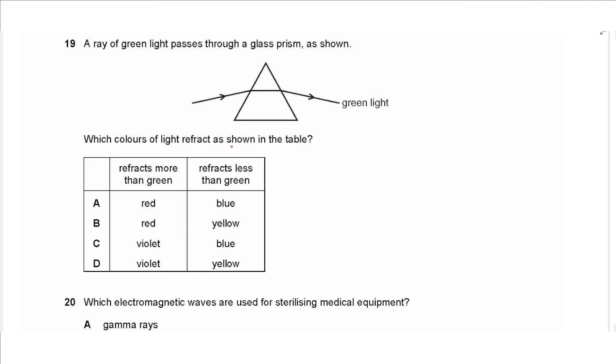Question 19 says a ray of green light passes through a glass prism as shown. Which colors of light refract as shown in the table. So more than green and less than green, so we have the list red, orange, yellow, green, blue, indigo, violet. We have green here and the choices are red and yellow and violet. So red actually refracts less than the green and violet refracts more, and yellow is in between the red and green. So more than green that's violet, and less than green that's yellow because blue is in this side of the spectrum so it will be more than green. So the common choice is D.